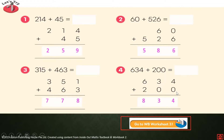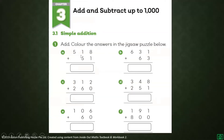If you are ready, let's go to WB Worksheet 3.1: Simple Addition — Add and Color. The answer is in the jigsaw puzzle below. Let's start letter A: eight plus one equals, one plus five, then five plus zero — the answer is 569. Eight plus one is nine, one plus five is six, five plus zero equals five. Letter B: one plus three, three plus six, and six plus zero equals — six hundred ninety-four.